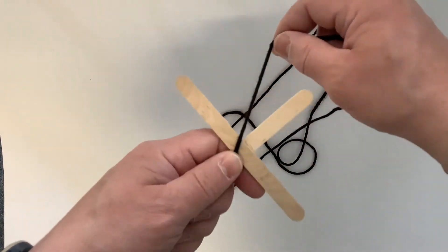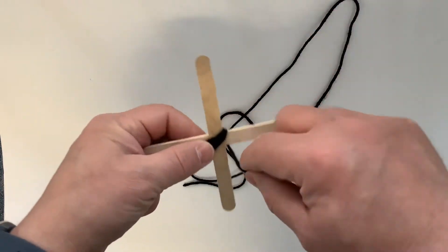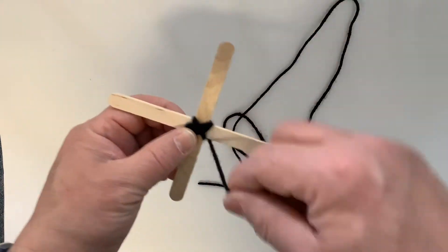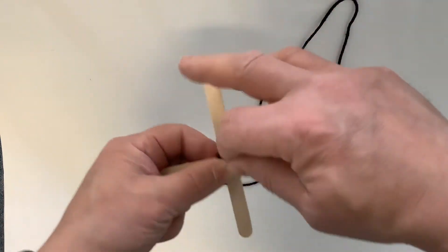Okay, so take your craft sticks and you're going to wrap a couple times diagonally around the center, and then change the angle and wrap the other direction around the center, sort of forming an X there.